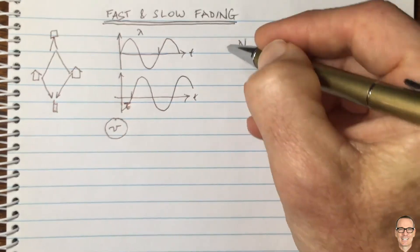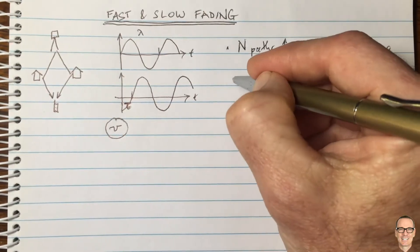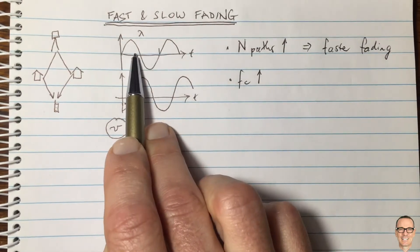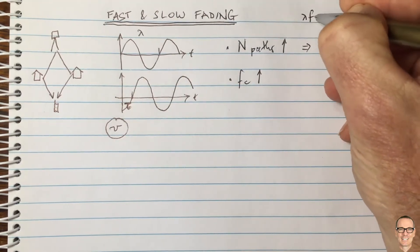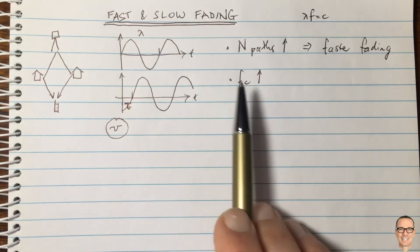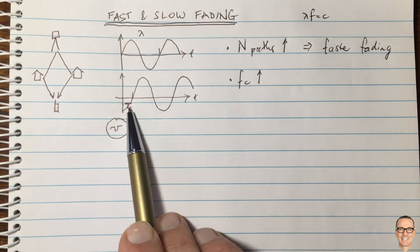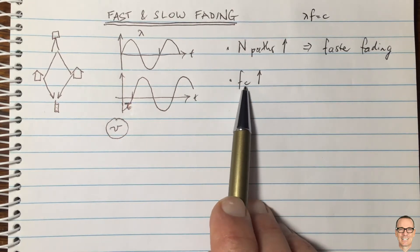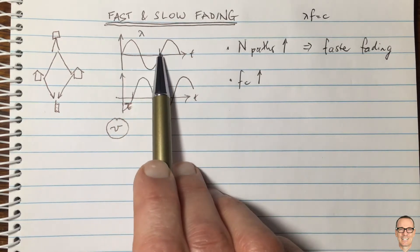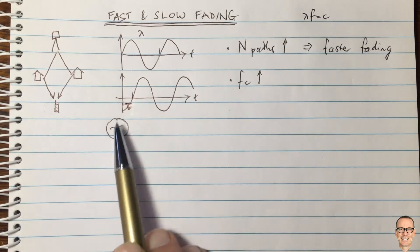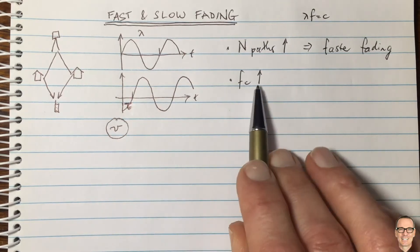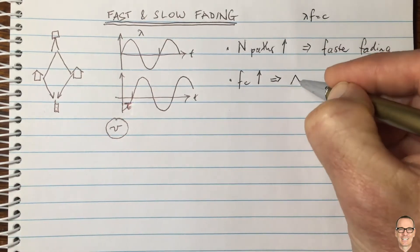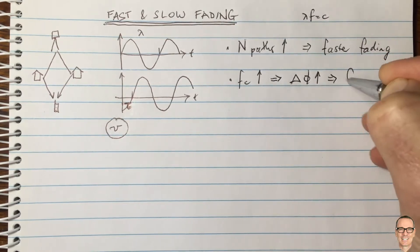Another parameter is the carrier frequency fc. As the carrier frequency increases, the wavelength decreases because λ × f = c. So the wavelength decreases as the carrier frequency goes up. For the same fixed delay τ — which comes from the physical environment and won't change just by changing the carrier — if we increase the carrier frequency, τ will be a bigger proportion of the wavelength. Therefore, movements will have a bigger effect, leading to a bigger phase spread, which means faster fading.